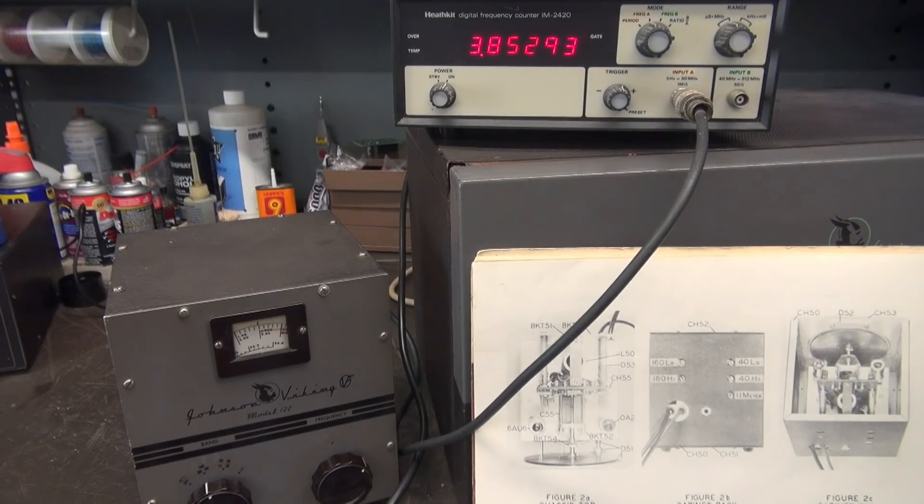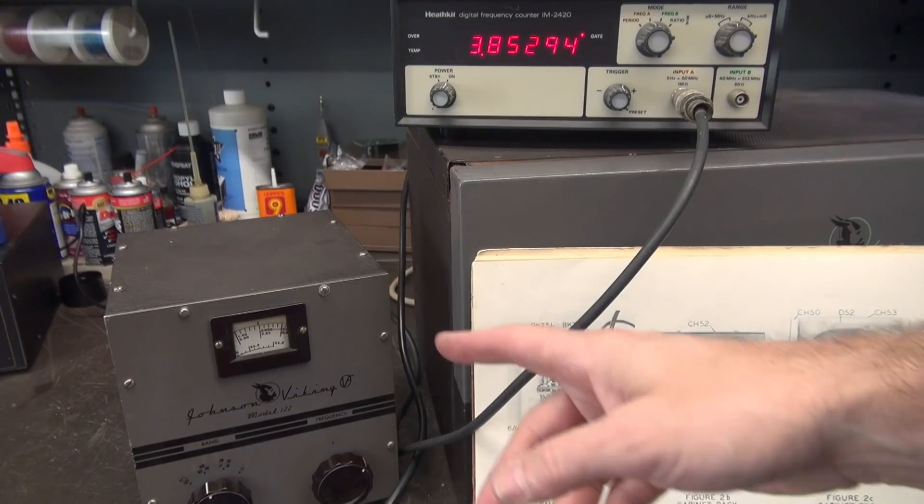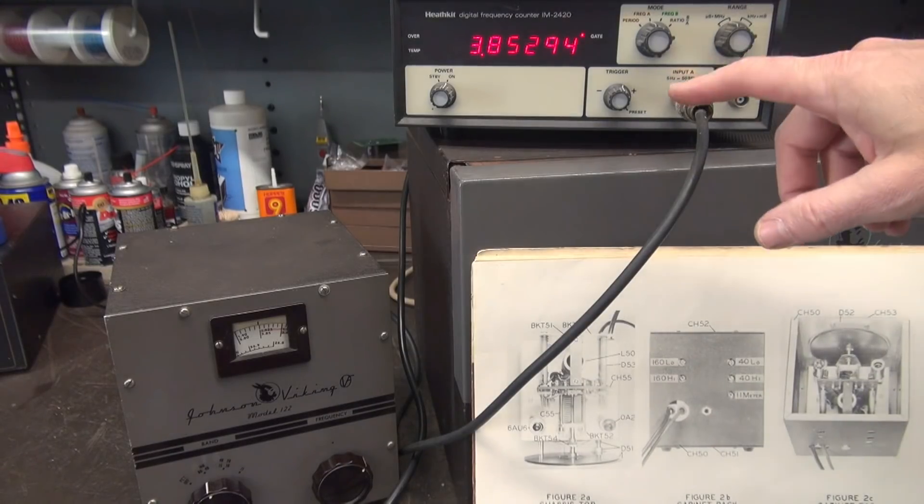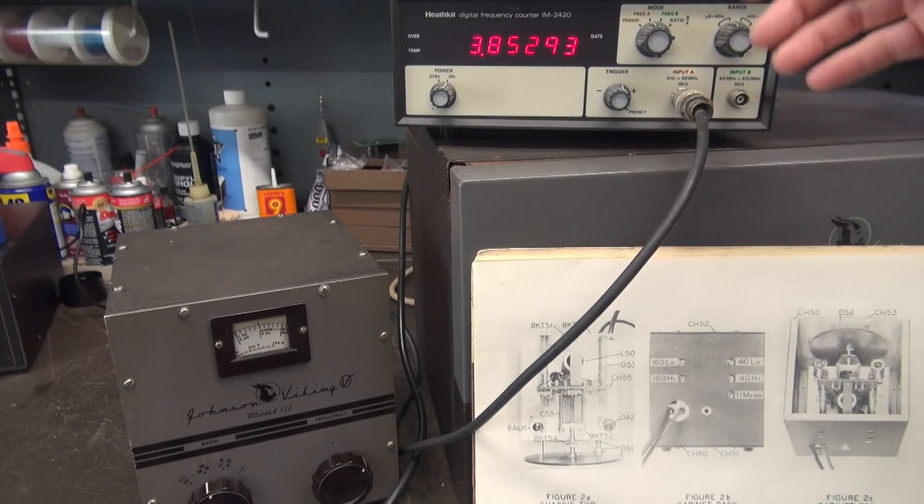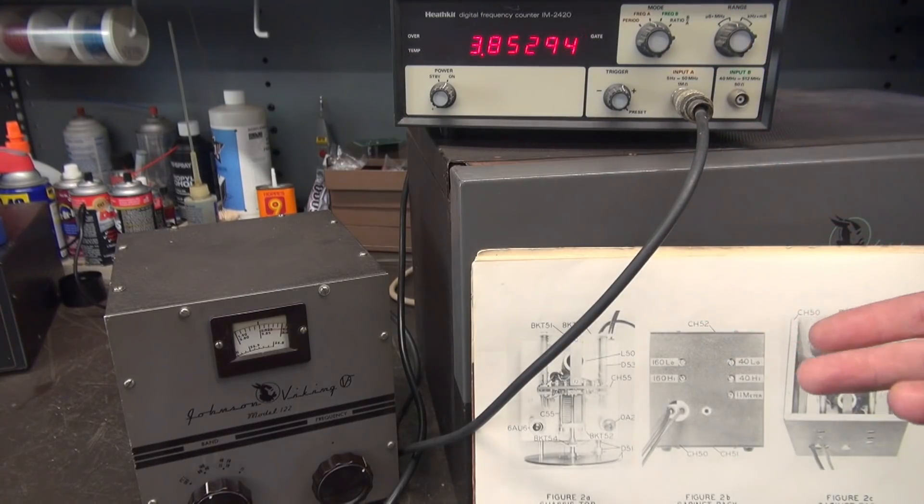All right, so this brings me to the portion of the video that I really wanted to cover to begin with, but some other items got in the way, and that's calibration of the VFO 122 VFO. The manual says tune in your receiver and spot your VFO and look at the dial and then adjust these little trimmers on the back. There's an easier way, at least in my opinion, and that is to take the output of the VFO and just take it into a frequency counter because on 80 and 40 meters it's going to read direct.